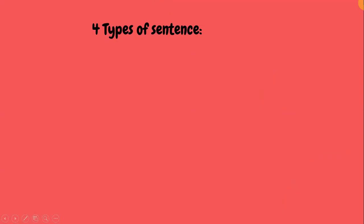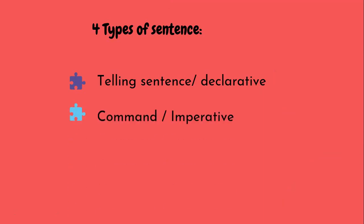There are four types of sentence. The first one is telling sentence or declarative. Second one is command or imperative. The third one is question or interrogative. The fourth one, exclamation. Okay, we will see each type.